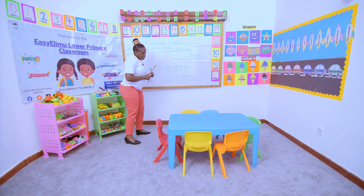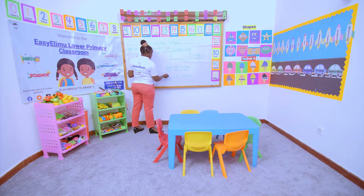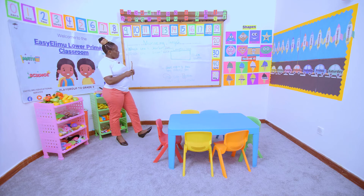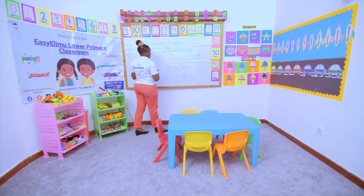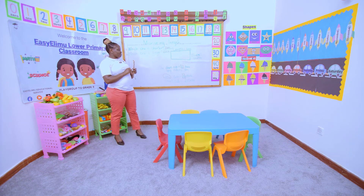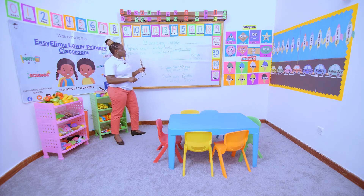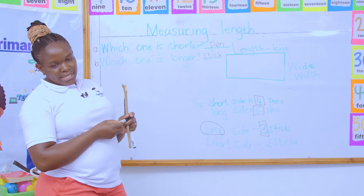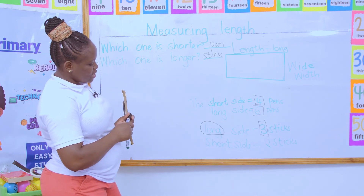Now another question: the longer side of the table is dash sticks — how many? Three sticks. Then another question: the shorter side of the table is dash pens — how many? Four pens. Very good, Oscar! The longer side of the table is dash pens — how many? Six pens. Very good! Janet, the shorter side of the table is dash sticks — how many sticks? Two sticks.